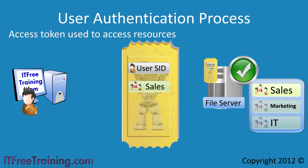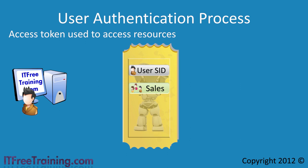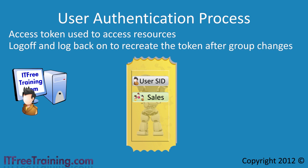You may be asking yourself what would happen if the user was removed from the sales group after the token had been generated. The answer is the user would still have access because the security token contains the SID for the sales group. The same applies if the user was added to say the marketing group after the token was created — the user would not have access to any of the marketing files because the security token does not contain the SID for the marketing group. To fix problems like these, the user simply needs to log off and log back on, and a new token will be generated with the new security information.